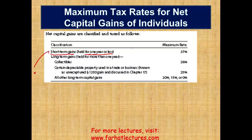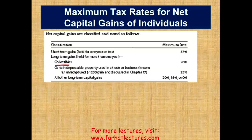Before we jump to long-term capital gains, if you have any collectibles — antiques, arts, things like that — they are subject to a special treatment: 28%. If your ordinary income tax rate is less than 28%, you'll use the lower rate. But generally speaking, if your tax rate is higher than 28%, collectibles will be taxed at 28%.